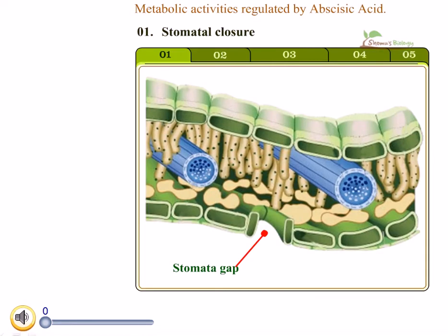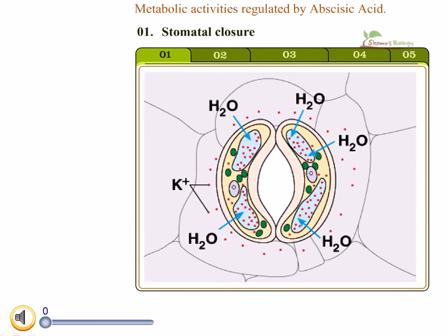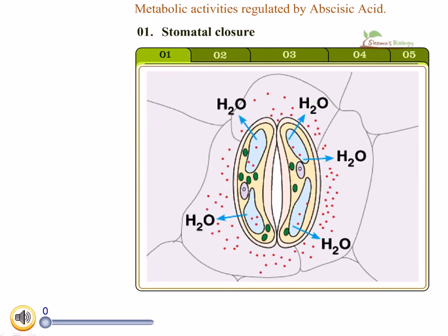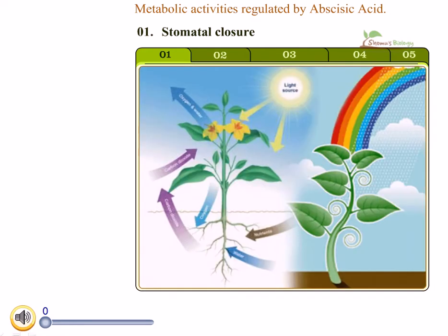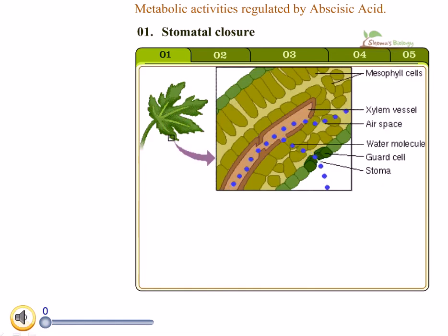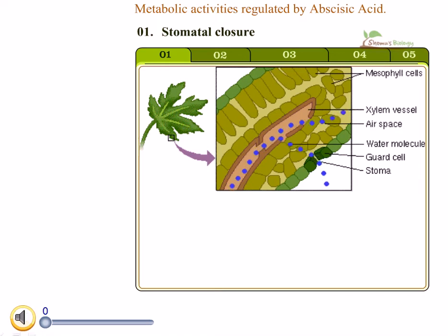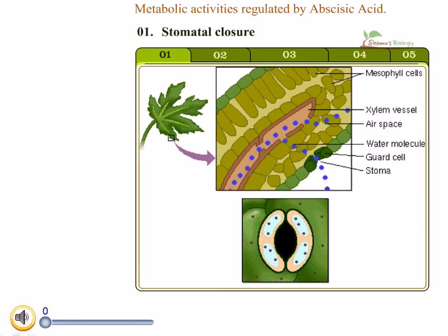Stomatal closure: abscisic acid regulates stomatal closure. When there is a water deficit, photosynthesis is the most sensitive activity affected. The permeability of the chloroplast membrane to abscisic acid increases when the water potential goes down, so the stored abscisic acid synthesized inside the chloroplast comes out, then diffuses through the cells in the middle of the leaf and reaches the guard cells of the stomata.